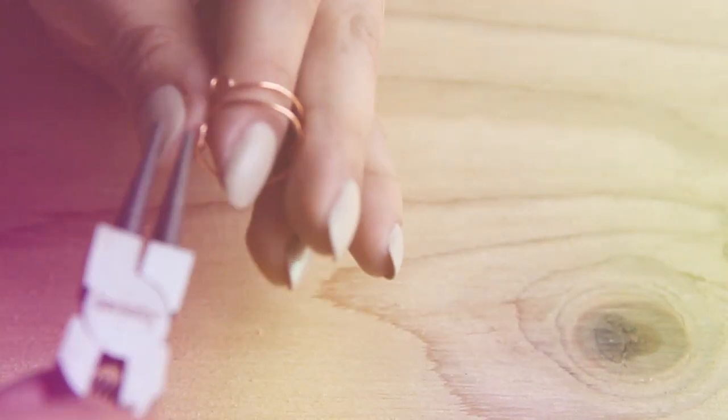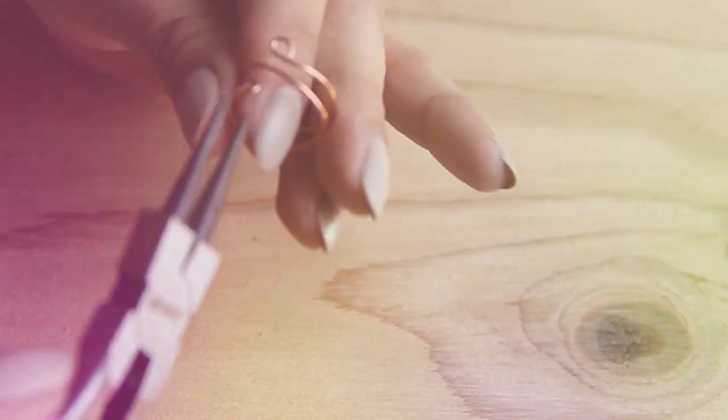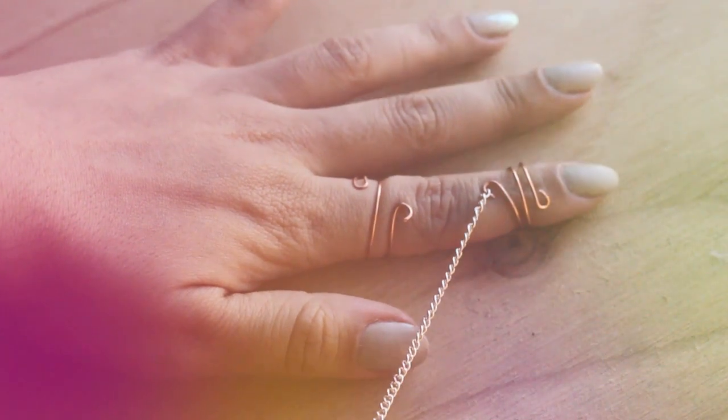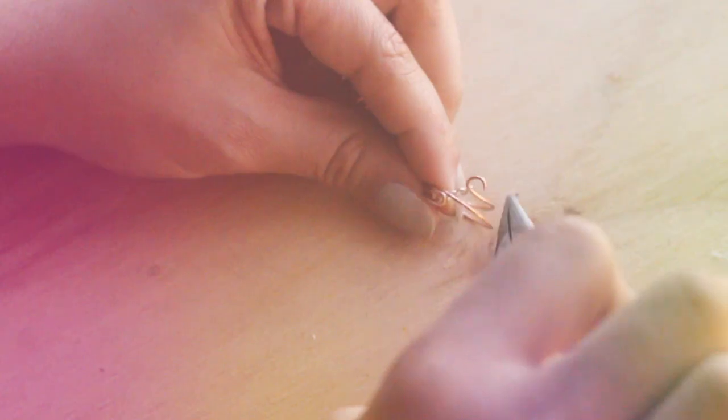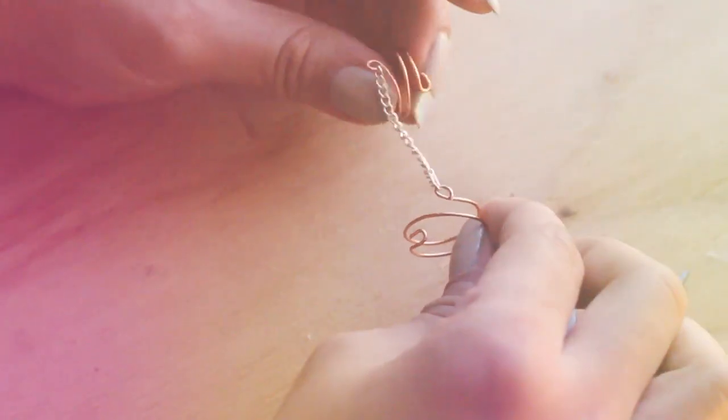Next, you're going to make another one to wear as a regular ring. Now this one, you're going to try on both rings, and then grab your chain and measure from loop to loop. Once you've got the size down, you're going to cut it. And then attach the chain.